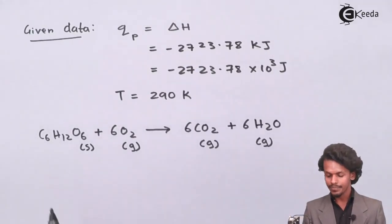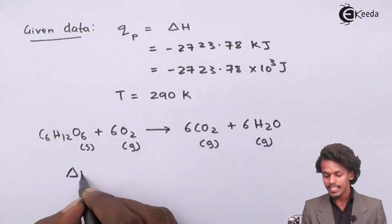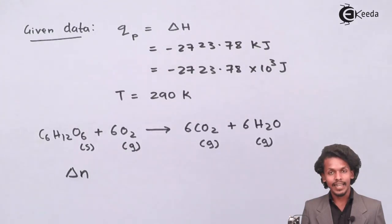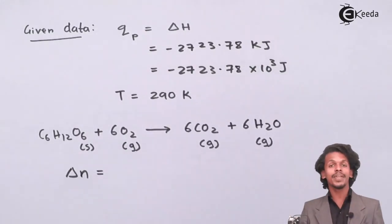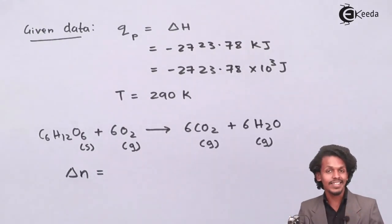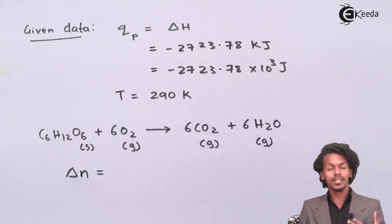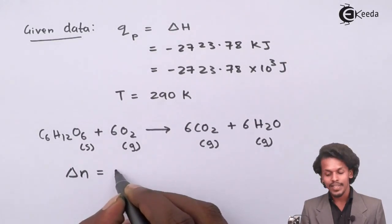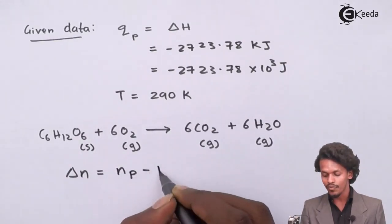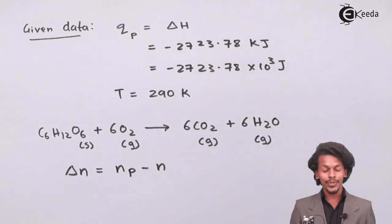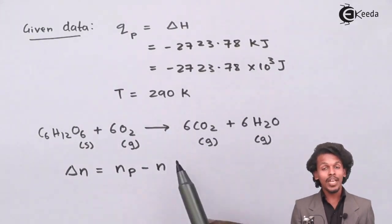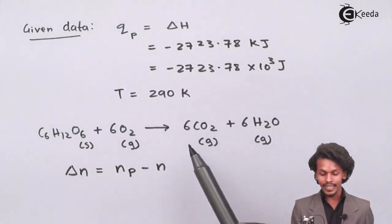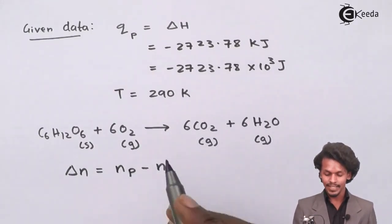The change in number of moles is represented by delta N, which is the difference between the number of moles of gases in the products minus the number of moles of gases in the reactants.